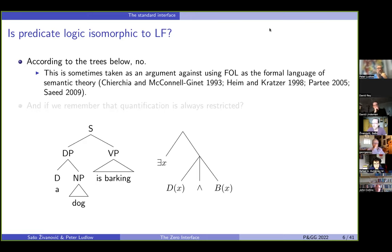But so people have already been asking themselves this question, is predicate logic isomorphic to the logical form of the minimalist theory? And the typical answer is no. And this answer is usually even taken to suggest it's like an argument against using first-order logic as a formal language of the semantic theory, which, in my opinion, is a little bit unfair, because nobody has ever said, oh, GQ is not appropriate as the formal language, because it's not isomorphic to syntax. But leaving this aside, okay, these two trees are not isomorphic.